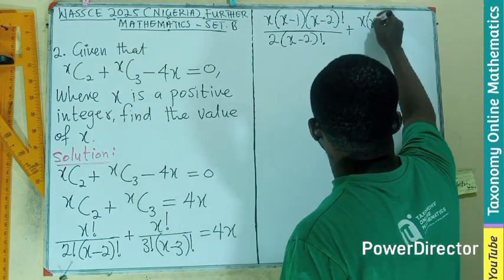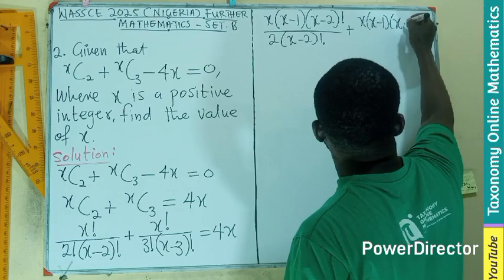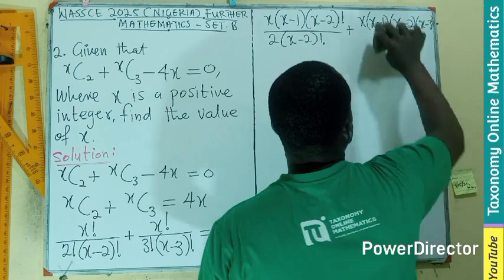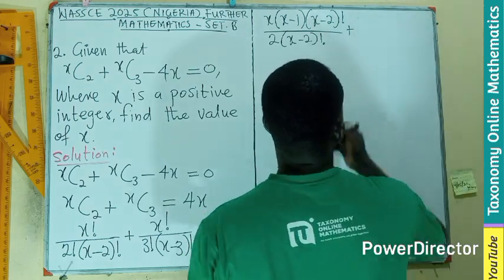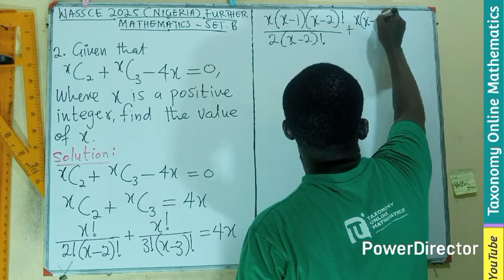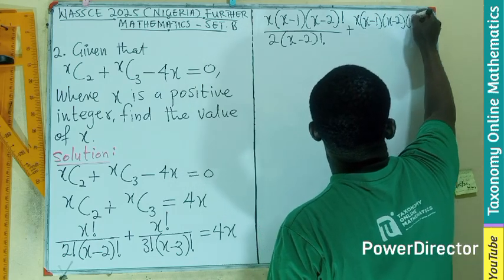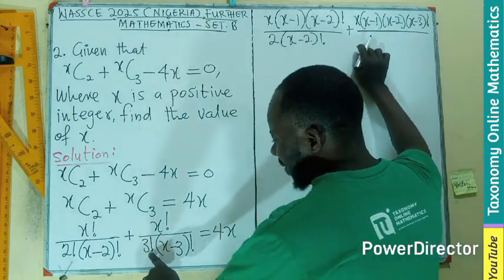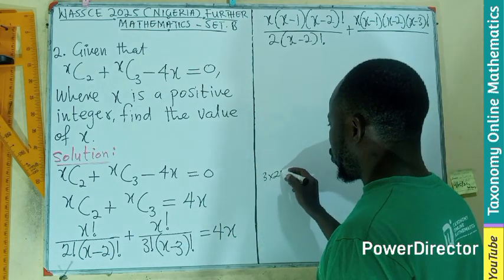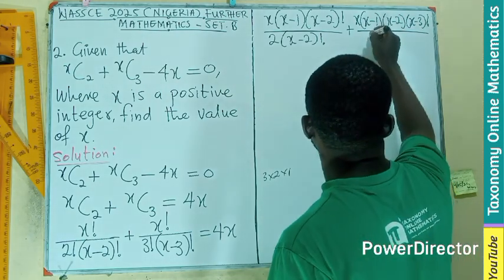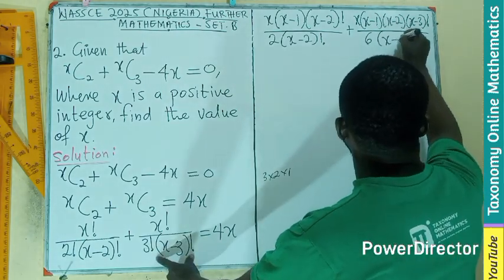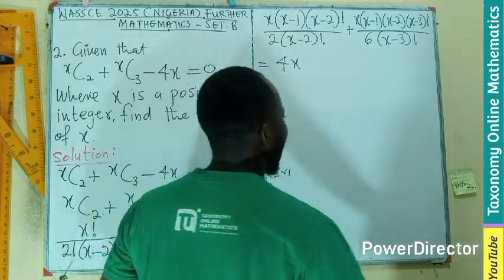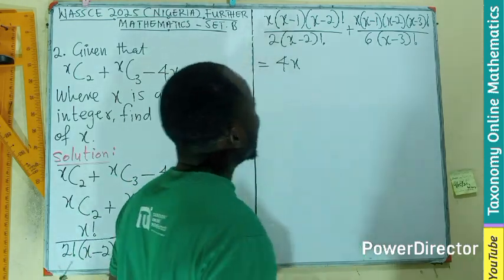Same will be done here. It should be x, x minus 1, x minus 2, x minus 3, still factorial. Here, we have x minus 1 minus 2 minus 3 factorial divided by 3 times 2 times 1, and that will give you 6. Then your x minus 3 factorial will come. Remember, this is equal to 4x. I need to get a bigger board. The board is not big enough, but we can manage.